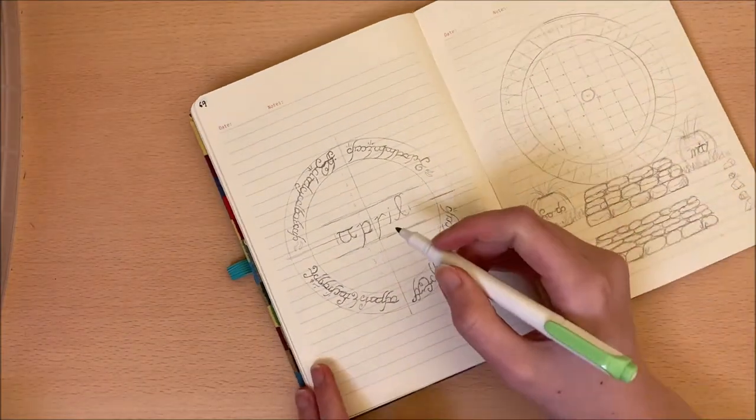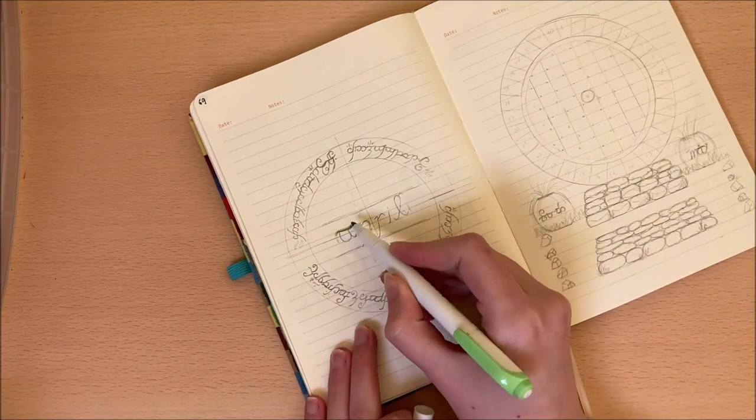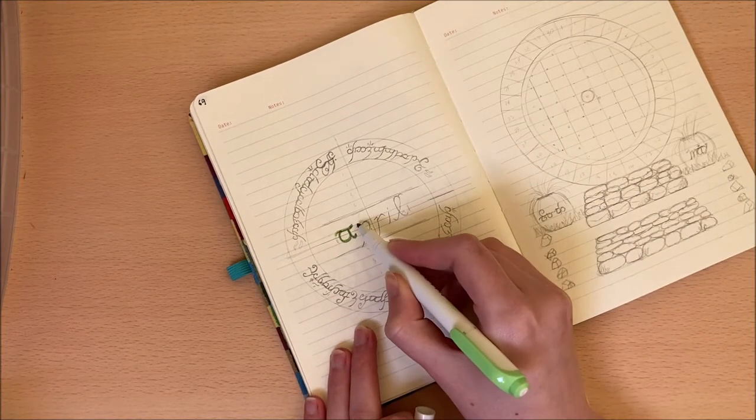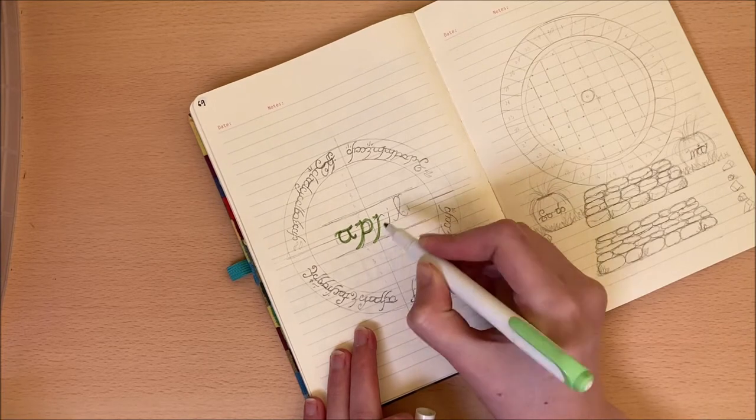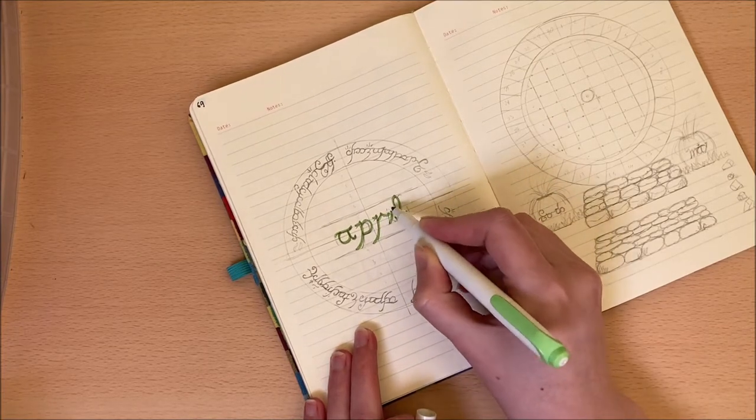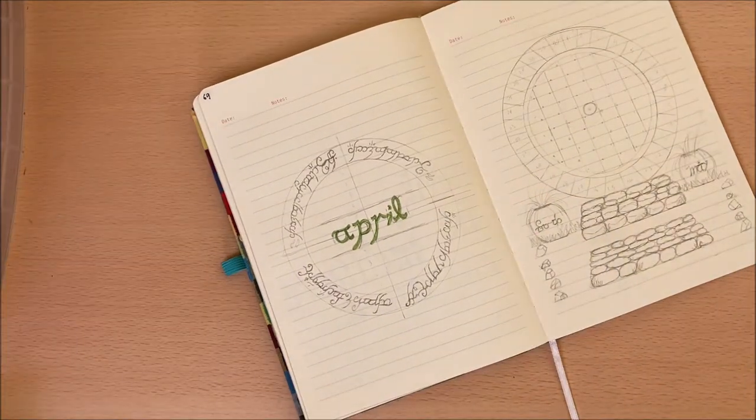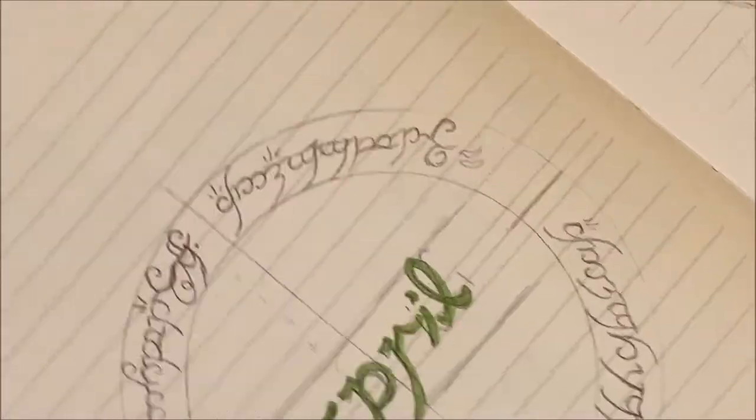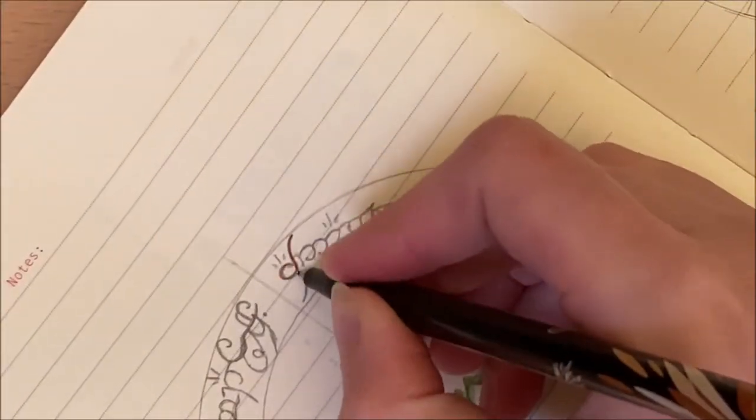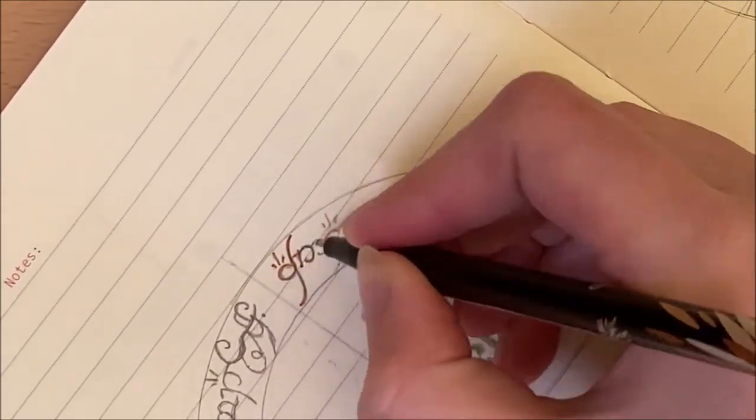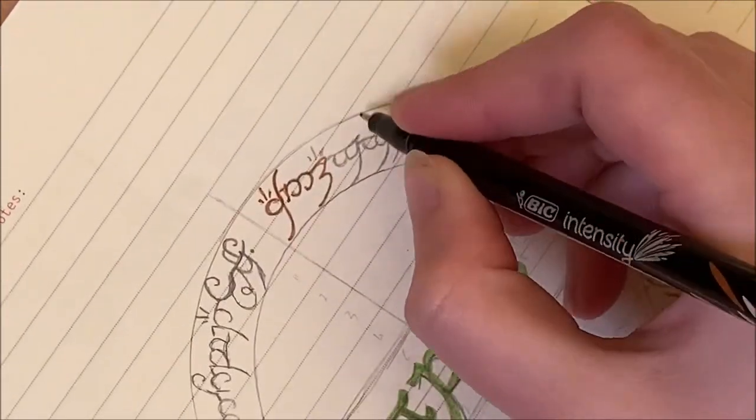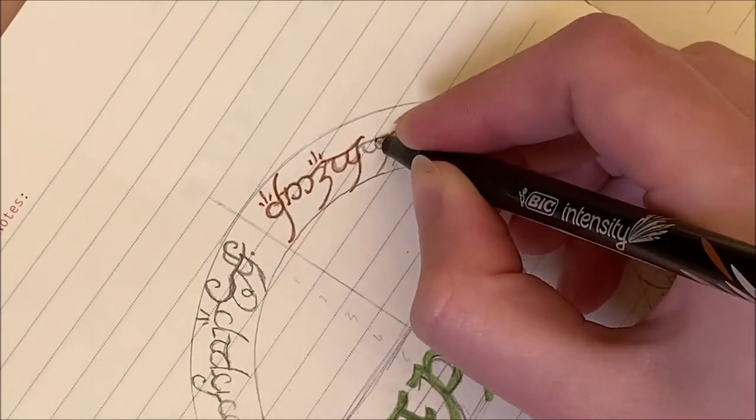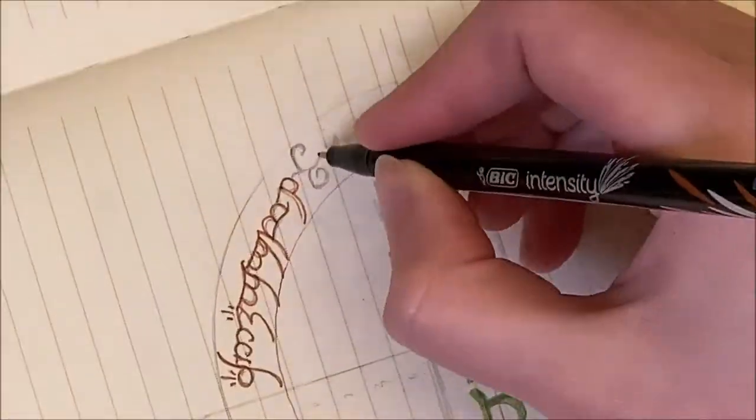This month I asked you guys both on Tumblr and on Instagram, under the username Sunscreen Studies, what you would like me to do for the bullet journal theme in April. A lot of you came back with fantasy related things, dragons, magic, and one person suggested The Hobbit and Lord of the Rings, both of which I absolutely adore. So I decided this month we're going to do a Hobbit, Lord of the Rings theme.